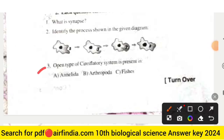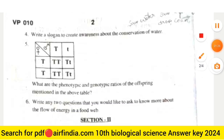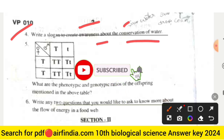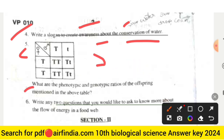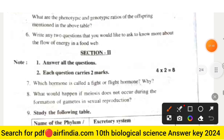An open type of circulatory system is present in Annelida, Arthropoda, and fishes. Question four: write a slogan to create awareness about the conservation of water. Question five: what are the phenotypic and genotypic ratios of offspring mentioned in the above table? Question six: write any two questions you would like to ask to know more about the flow of energy in a food web.